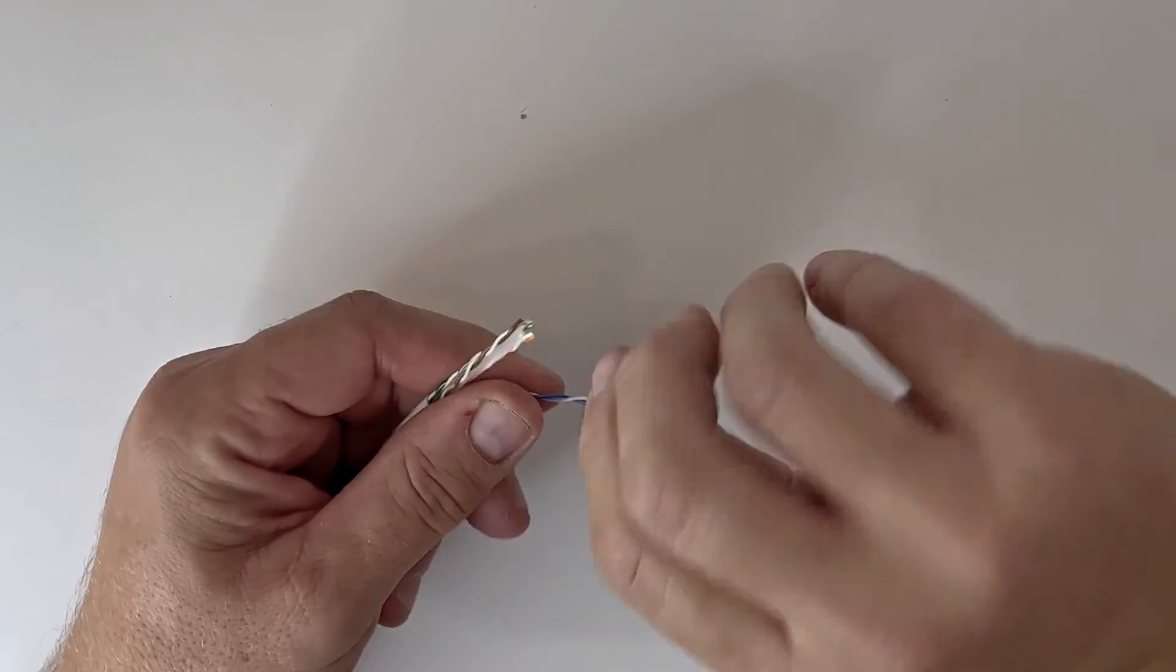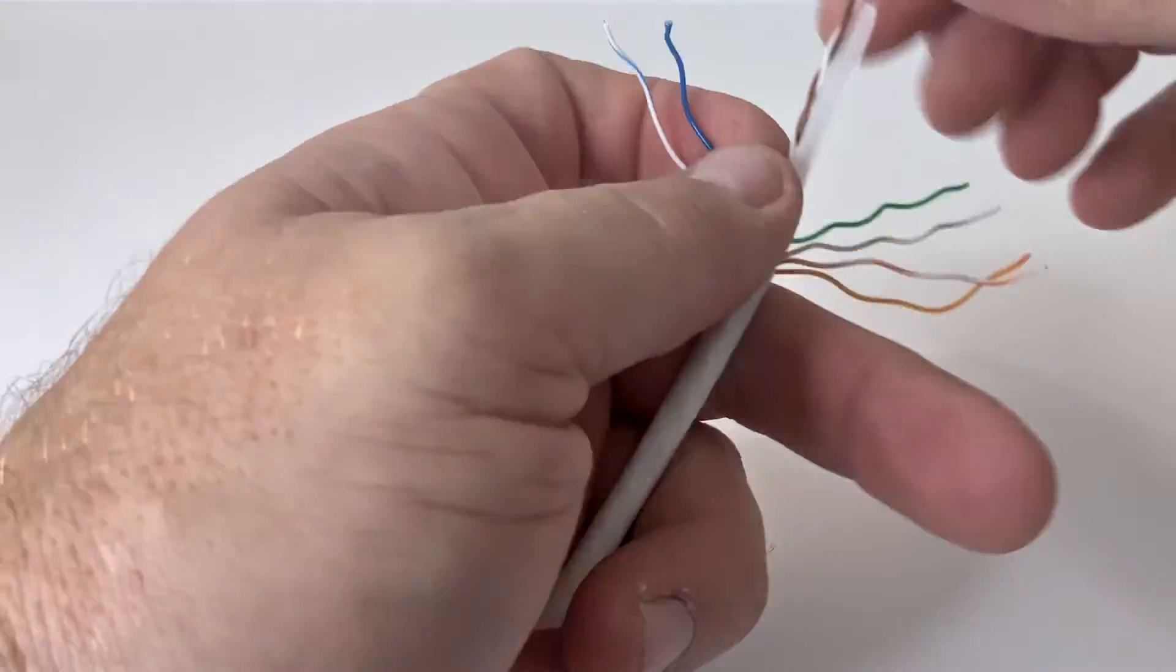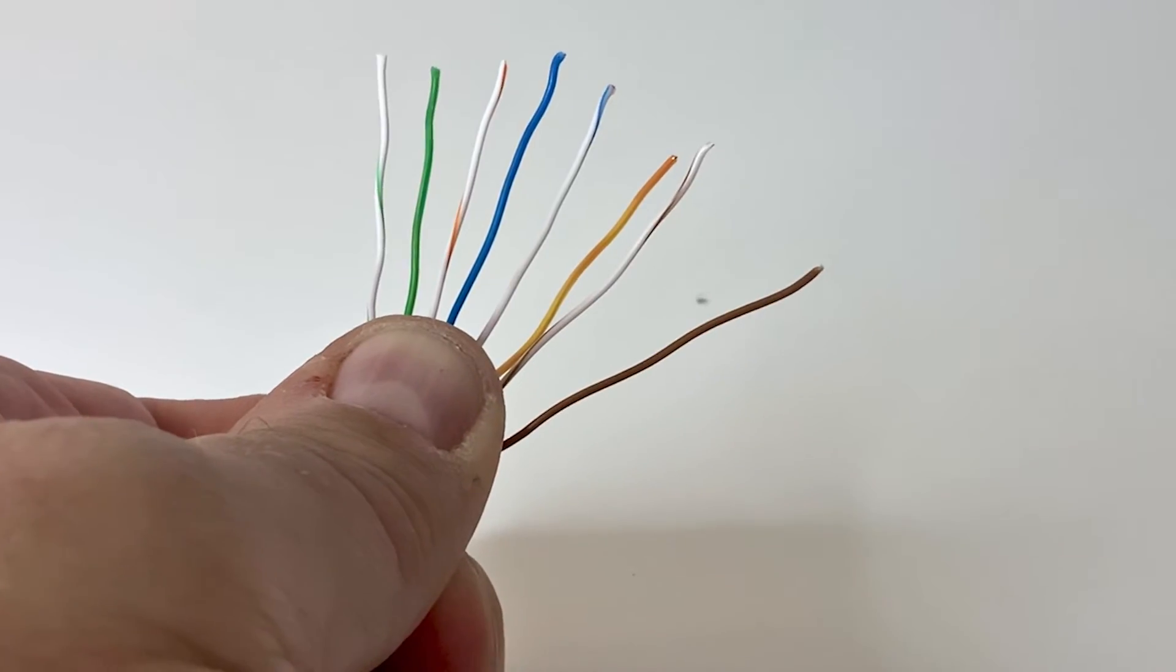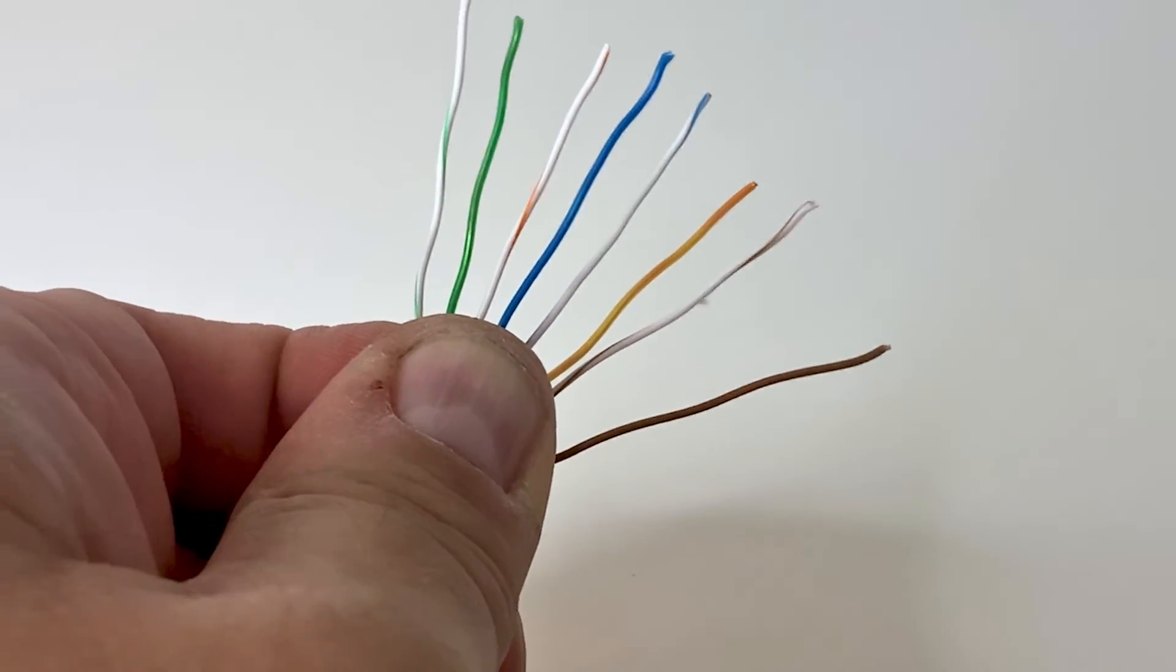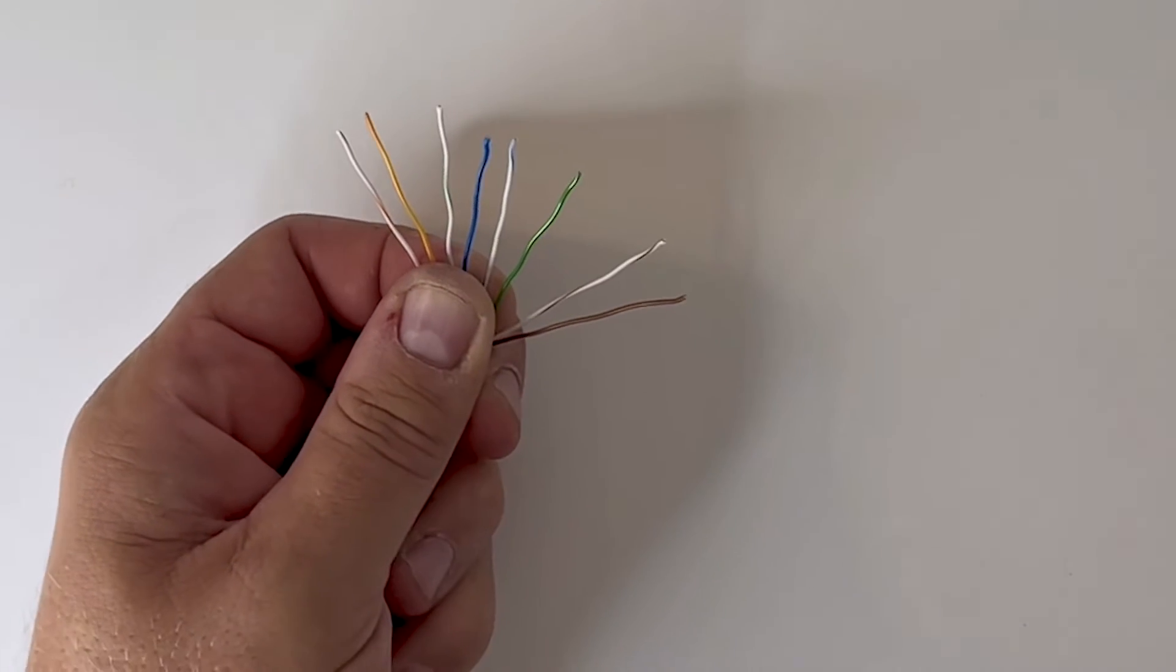Untwist and straighten each of the wires, placing them into the T568B or T568A pinout order. Hold the wires in order between your fingers. It's important that you remove all the kinks in the wires, keeping them side by side without any gaps. This will prevent crosstalk.